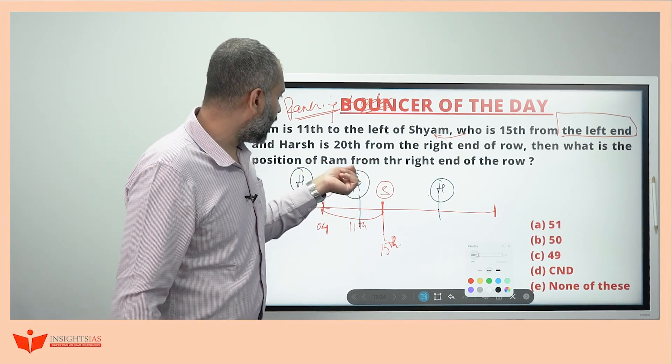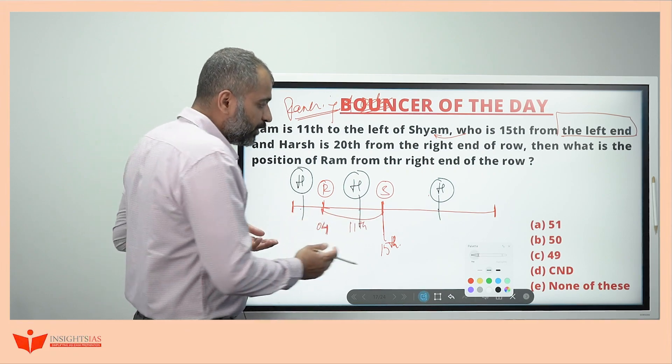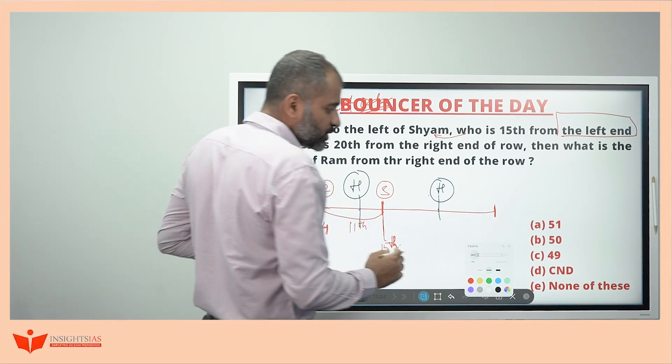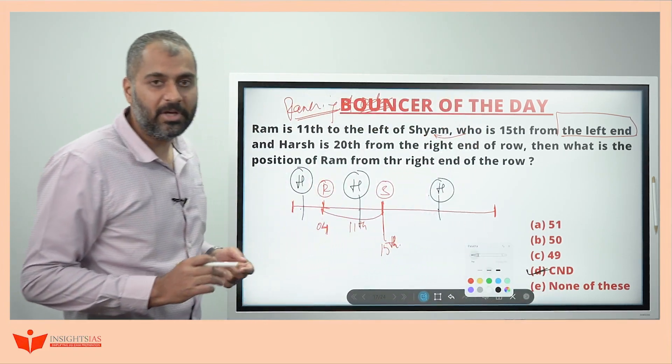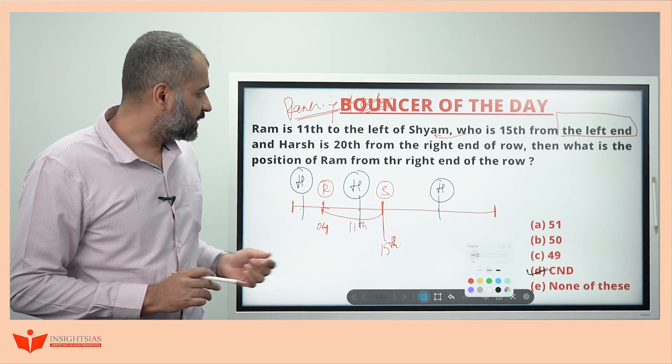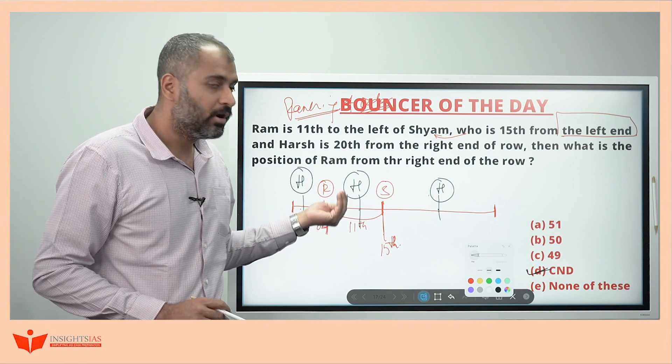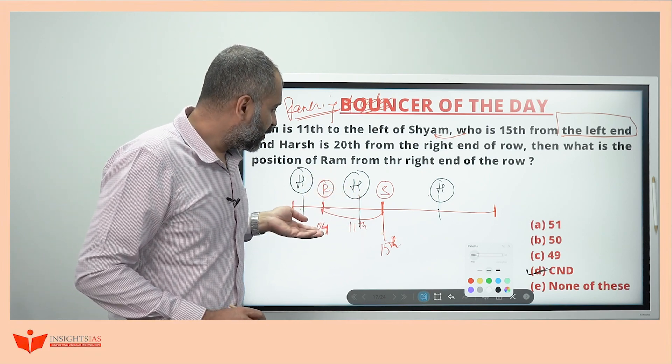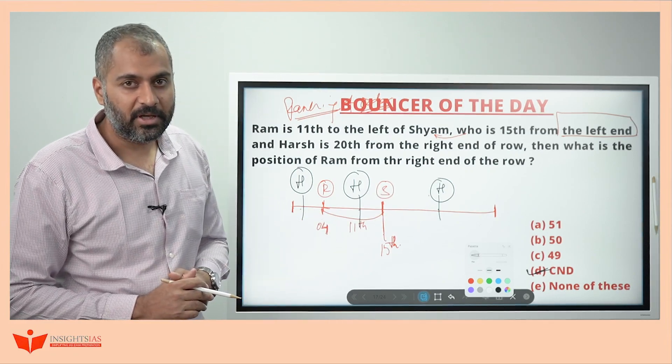Then what is the position of Ram from the right end of the row? From the right end of the row, since we don't know how many people are there in this row, in this question, we cannot find out. That is C and D means can't be determined. In this case, the position of Ram from the right is not known or else can't be determined because it's not mentioned how many people are there in this row.